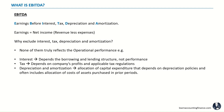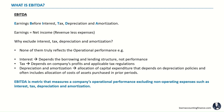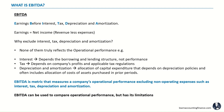Depreciation and amortization are non-cash expenses and really reflect allocation of capital or intangible expenditure that has already incurred. Often these expenses are incurred in the past — you may have an asset that was purchased 10 years ago and you're still allocating the cost of that asset in the income statement. That's why depreciation and amortization are also excluded. So EBITDA is a metric that measures the company's operational performance, excluding non-operating expenses such as interest, tax, depreciation, and amortization. EBITDA can be used to compare operational performance, but has its limitations, which we will discuss in a separate section.